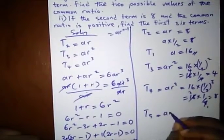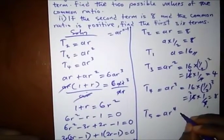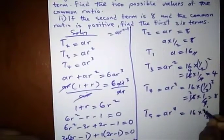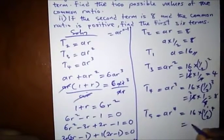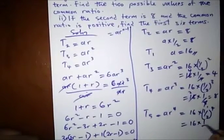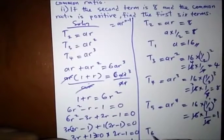Our fifth term is AR⁴ which equals 1, and our sixth term